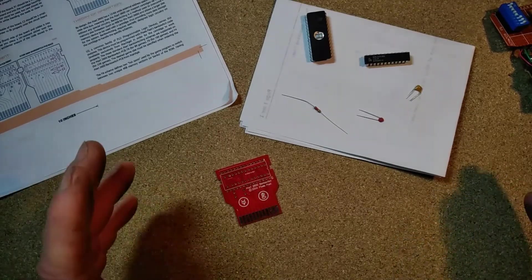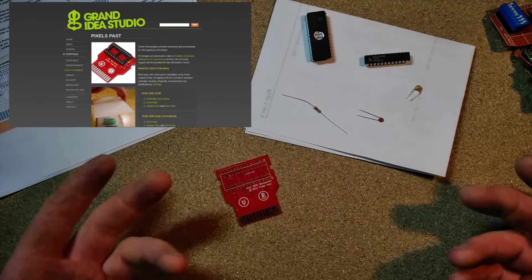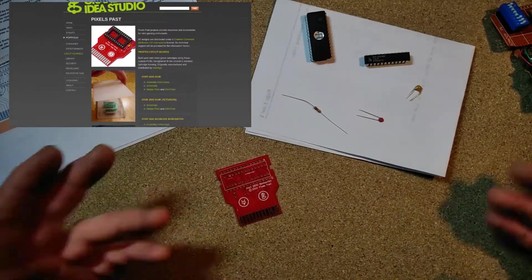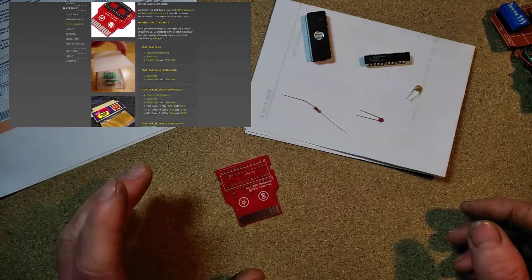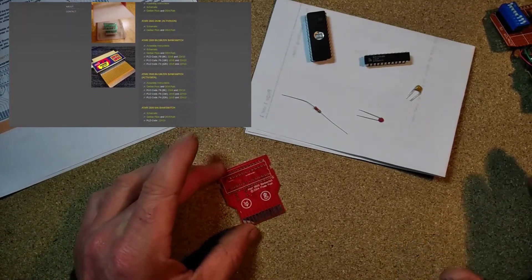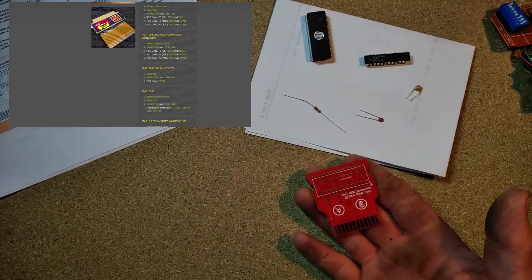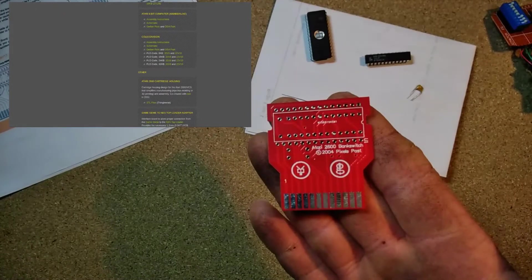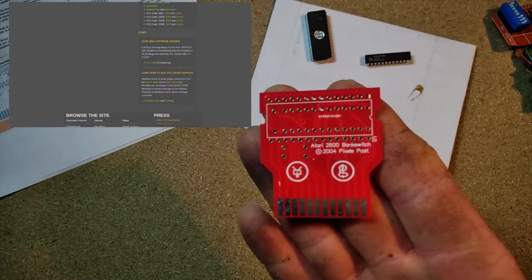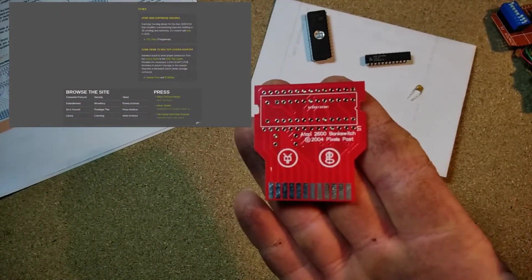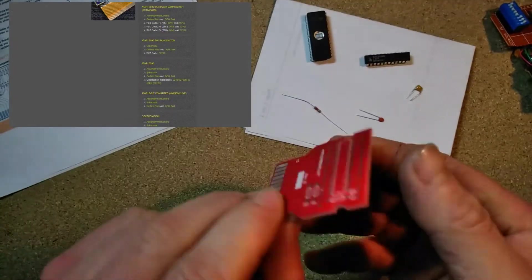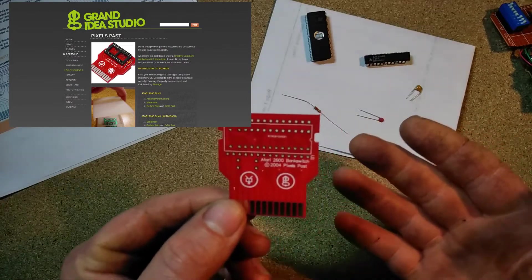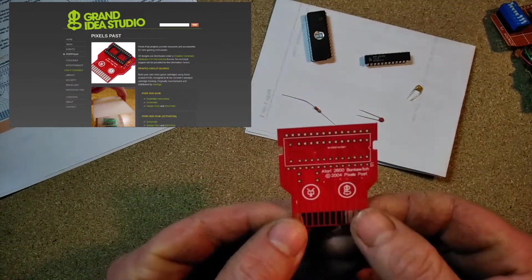Back in 2004 Pixels Past were selling these little kits, but since then all this stuff has been released under the Creative Commons version 4 license, which means the Gerber files to make the PCBs are freely available along with the BOM and all the bits and pieces you need to make your own cartridges.